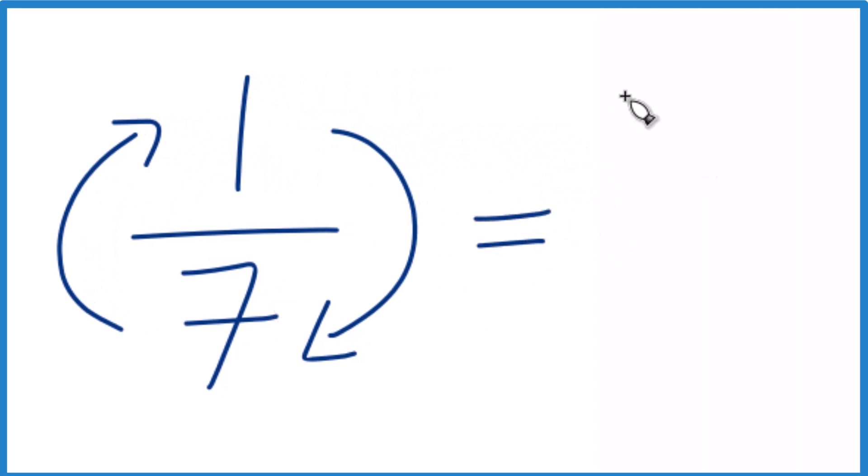So 7, that becomes the numerator, and 1, that becomes the denominator. And the reciprocal for 1/7 is 7 over 1.